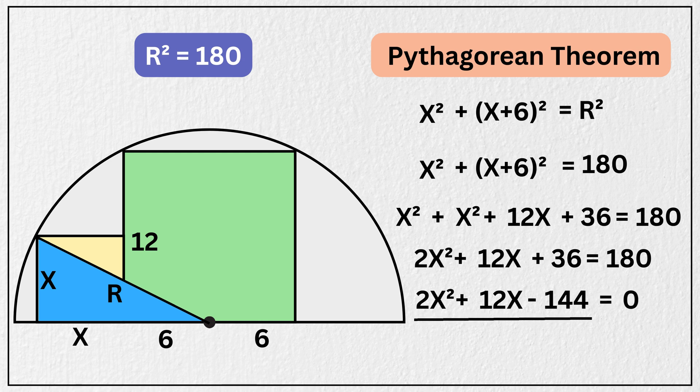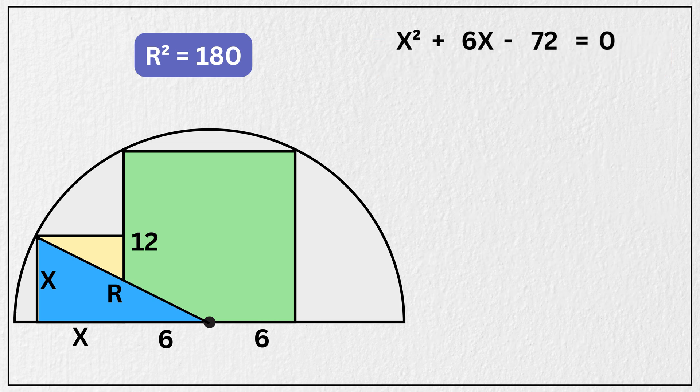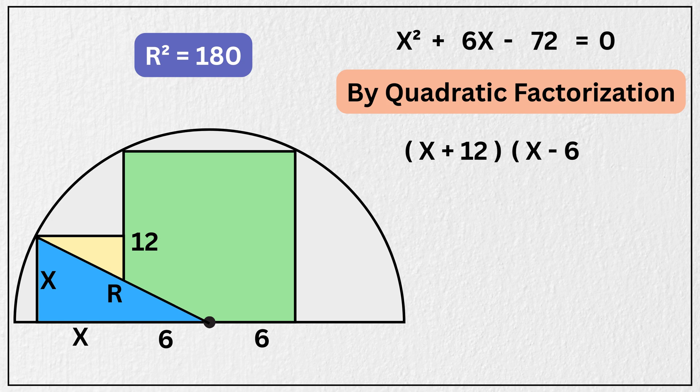And dividing the entire equation by 2 gives us x squared plus 6x minus 72 equals 0. Solving this quadratic using factorization gives us x plus 12 and x minus 6, and that means x is equal to negative 12 and 6.